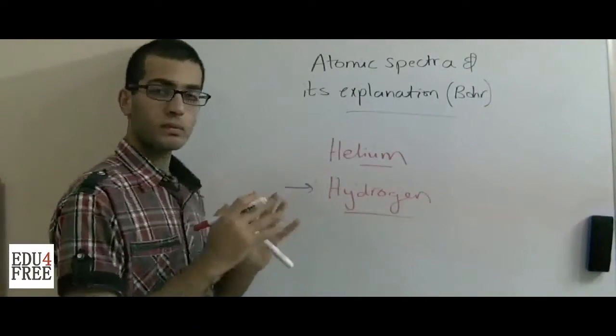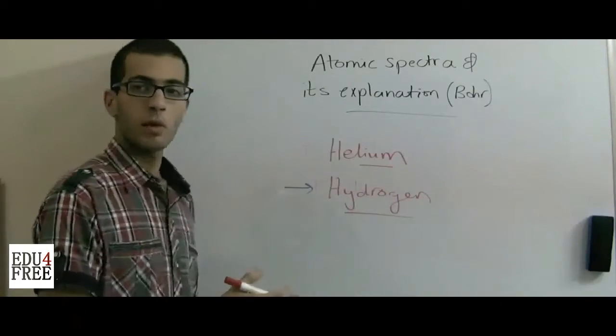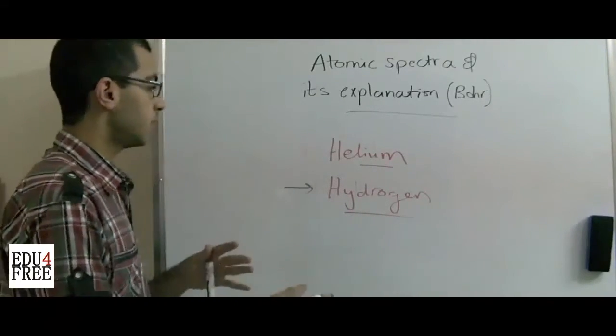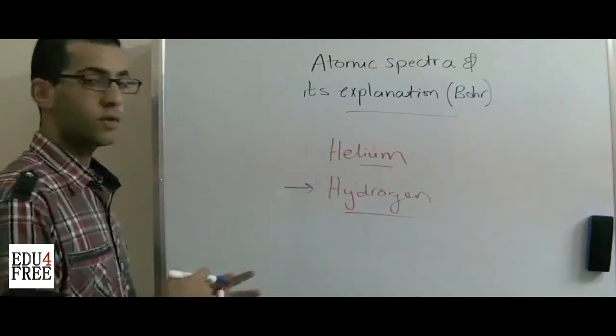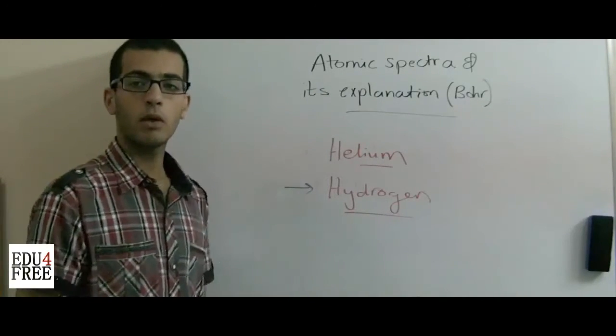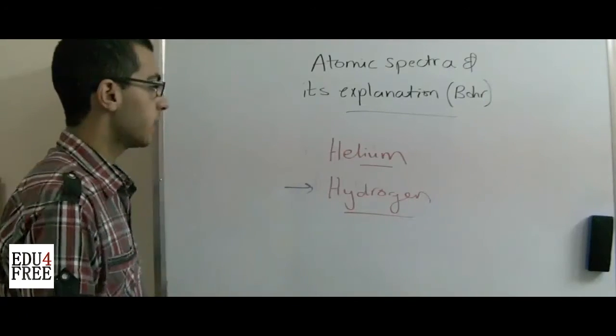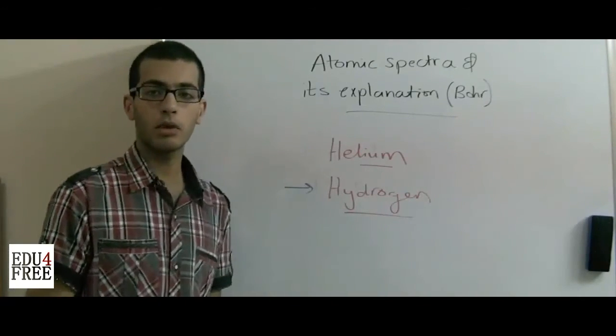So what did Niels Bohr do in making his atomic model? What did he take from the atomic model of Rutherford? What were the contradictions with Rutherford's atomic model? That's what we'll know in the next time. Until then, I thank you for watching and see you.